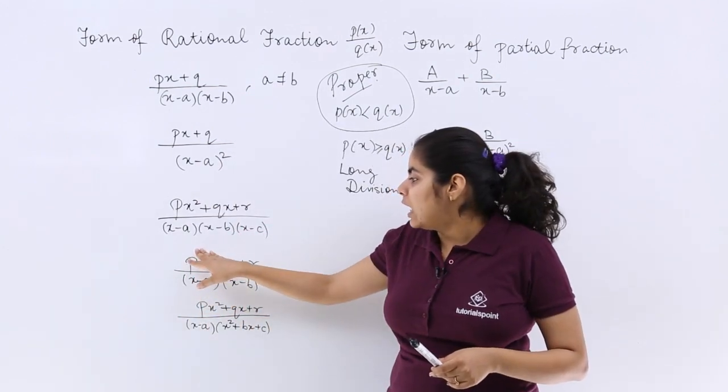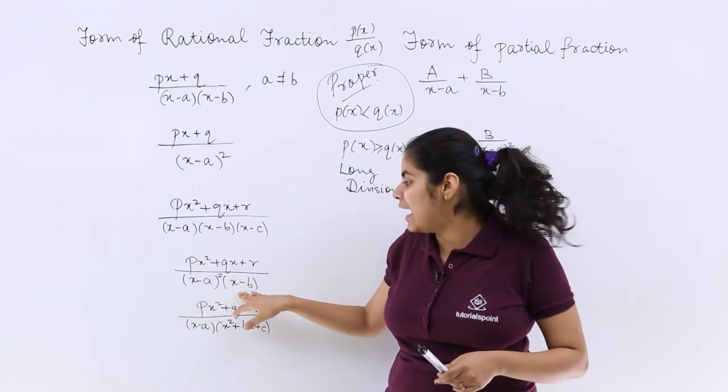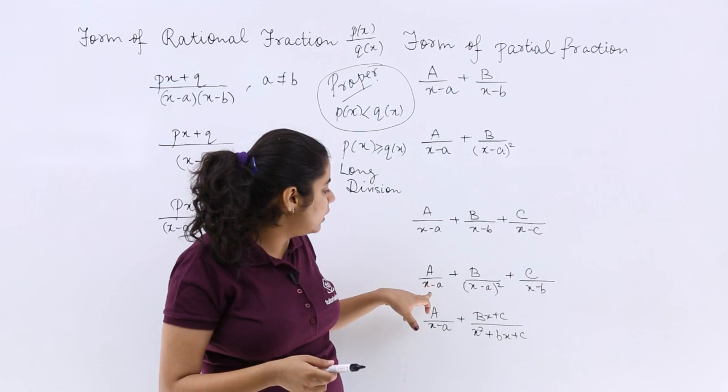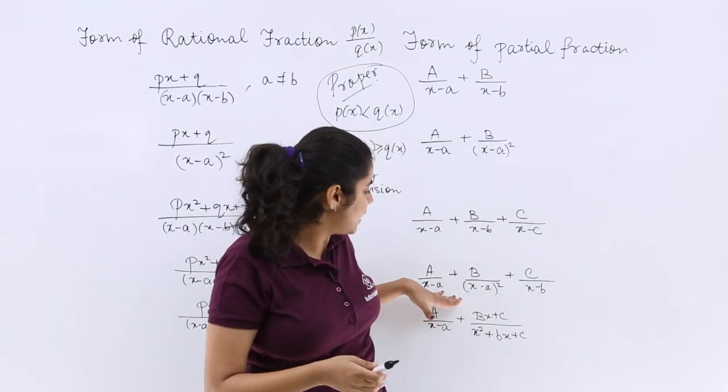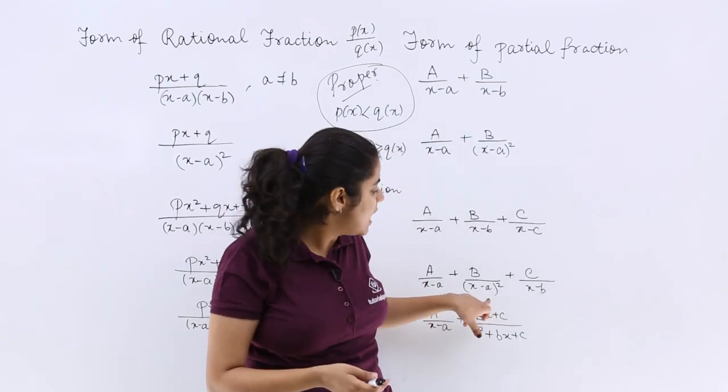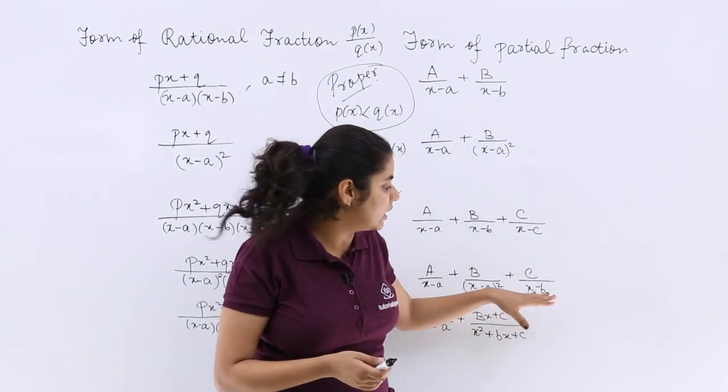The fourth form, again a quadratic in the numerator, the denominator has a whole square and (x - b)—a separate factor. So a/(x - a), then the whole square will be taken together (x - a)², then the last factor (x - b) will be taken here.